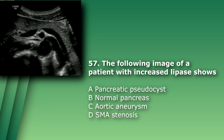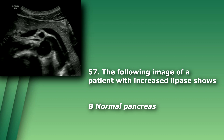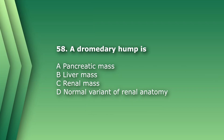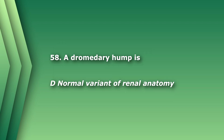Question 57: The following image of a patient with increased lipase shows: A) pancreatic pseudocyst, B) normal pancreas, C) aortic aneurysm, D) SMA stenosis. The answer is B, normal pancreas. Question 58: A dromedary hump is: A) pancreatic mass, B) liver mass, C) renal mass, D) normal variant of renal anatomy. The answer is D — a dromedary hump is a bulge in the left kidney most likely caused by the impression of the spleen on the upper part of the kidney.